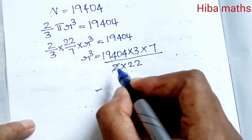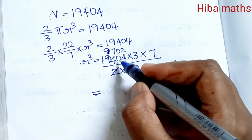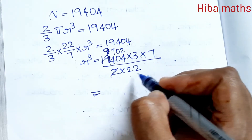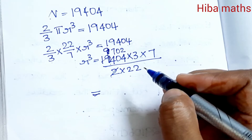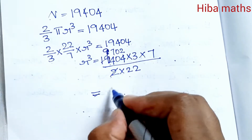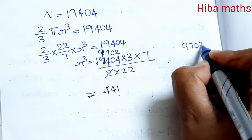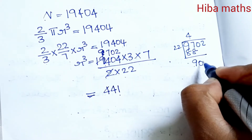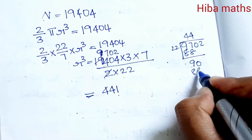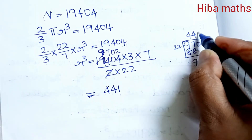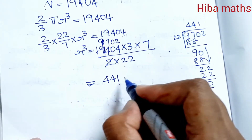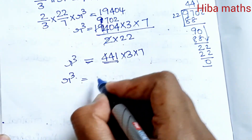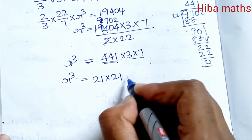Now we solve the division. Working through: 9702 divided by 22 equals 441. So r³ = 441 × 3 × 7 = 441 × 21. And 441 = 21 × 21, so r³ = 21 × 21 × 21, giving r = 21 centimeters.